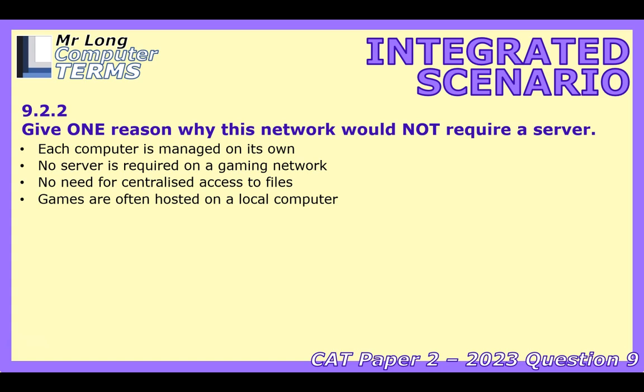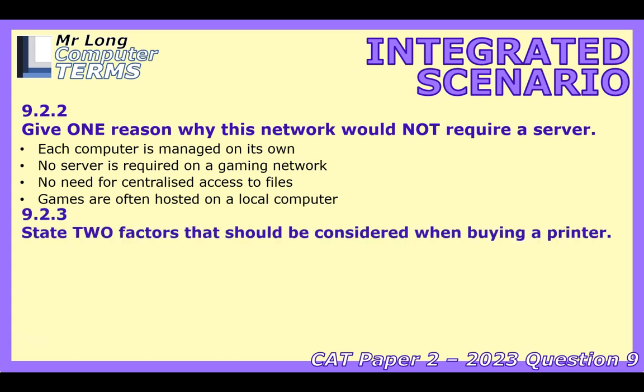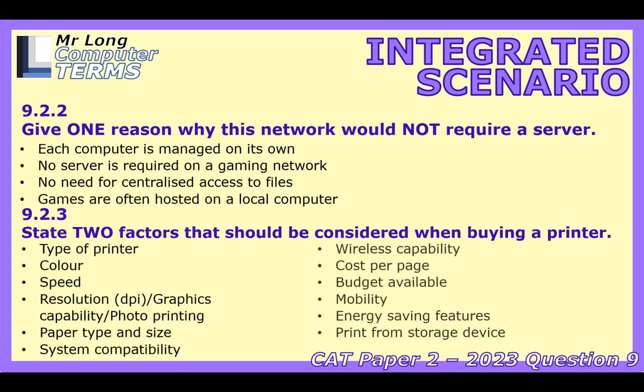Shifting to printers for admin tasks. Question 9.2.3 asks for two factors to consider when buying one. The list includes printer type, color, speed, resolution, paper handling, connectivity, costs, future needs, and energy use. Two key factors: print speed matters in any admin setting — if you need to print batches of forms, you don't want to wait ages. And cost per page is crucial — ongoing ink or toner costs can really add up, so choosing a printer with a low cost per page saves significant money long-term.